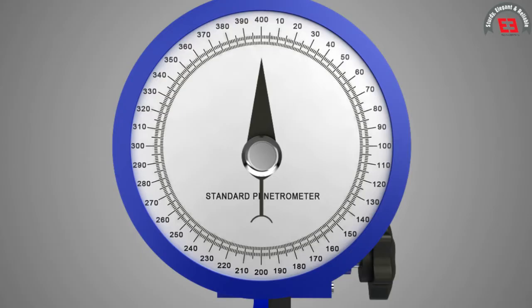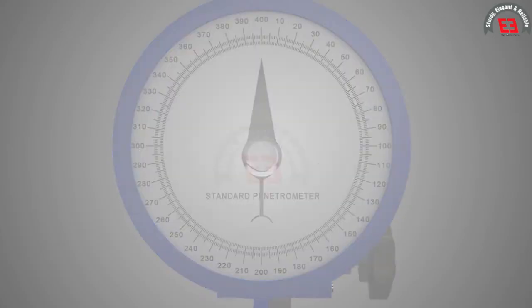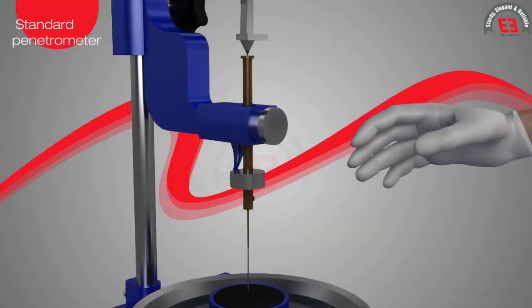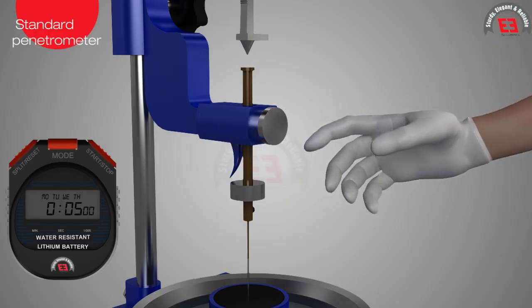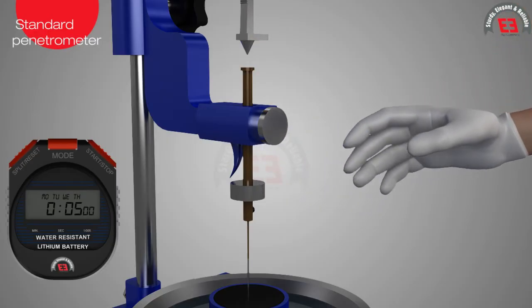The initial reading of the penetrometer dial is either adjusted to zero or the initial reading is taken before releasing the needle. In standard penetrometer, needle is released exactly for 5 seconds by pressing the knob, where the release time is measured by precise stopwatch.